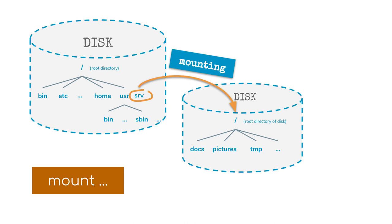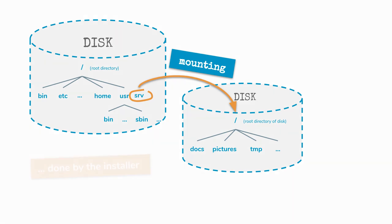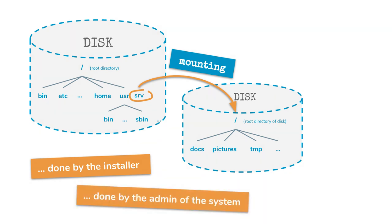For now we just want to understand how the whole thing works. The mounting of additional disks or partitions into the central file system is sometimes done by the installer to give you an optimized disk layout for a special use case, and sometimes it's done later by the system admin to better organize the needed disk space — spending multiple independent disks or partitions across the system.